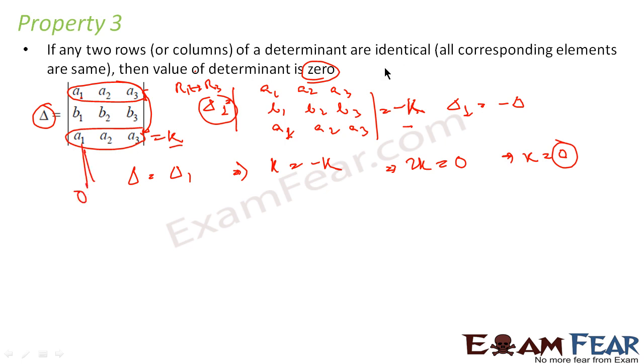That means the determinant of this is 0, and determinant value of this is also 0. Without even solving, just using the property we have solved this. And that is the power of properties. We'll solve more questions where you see that using property without even expanding the determinant you can find the values.